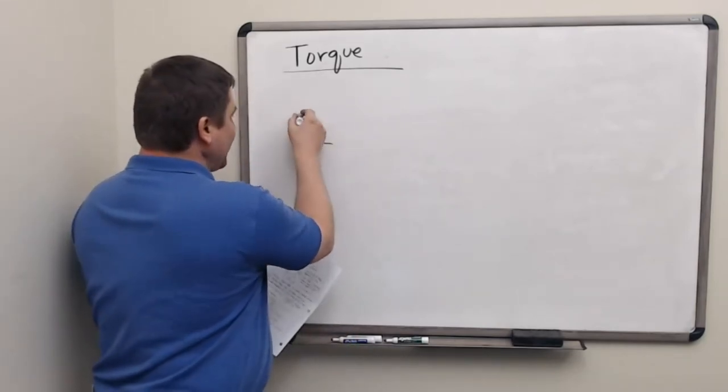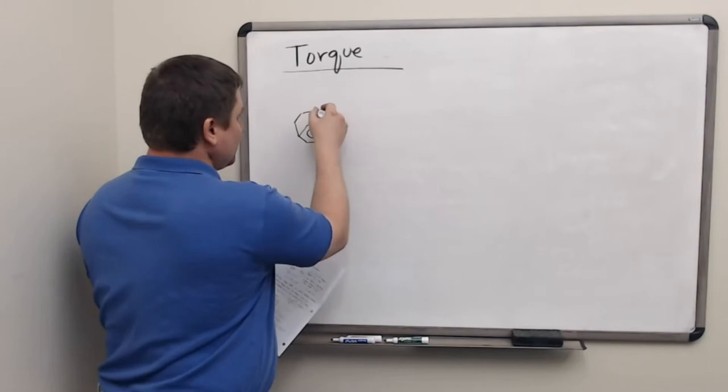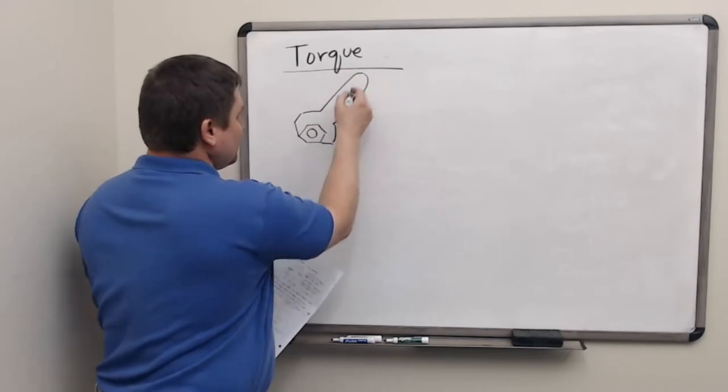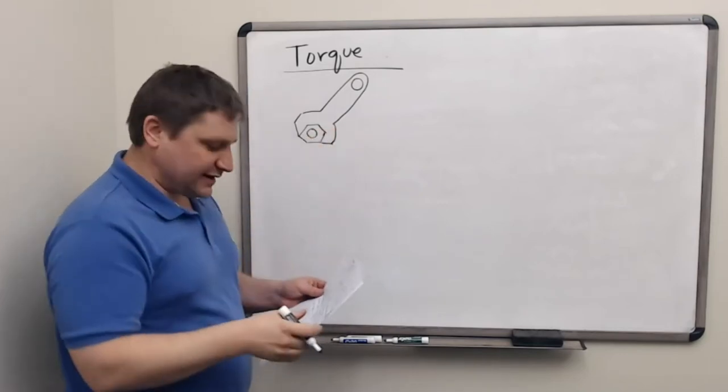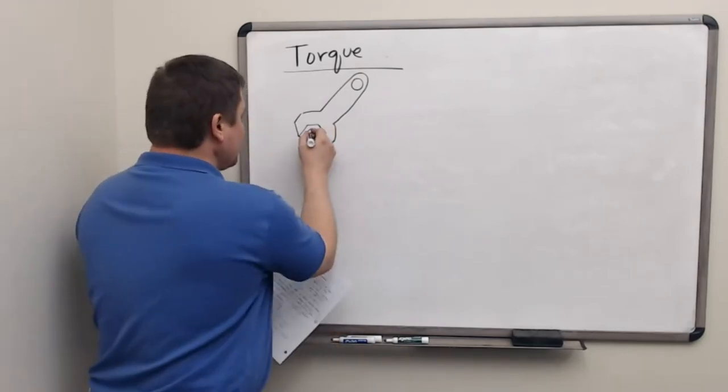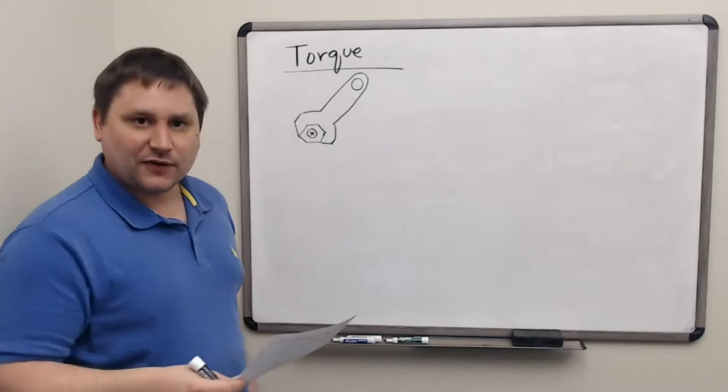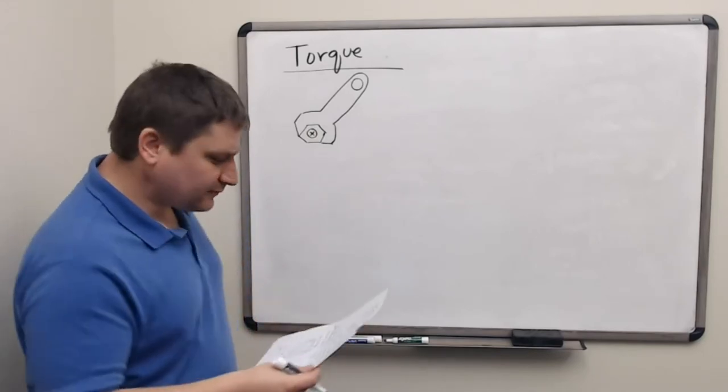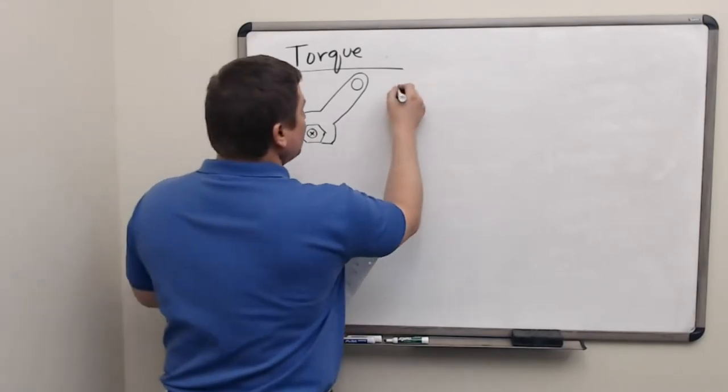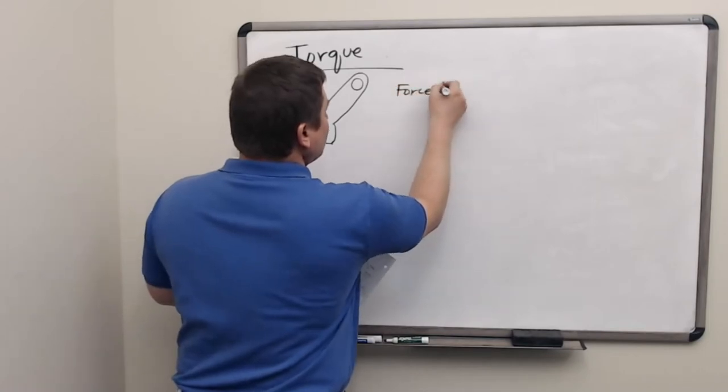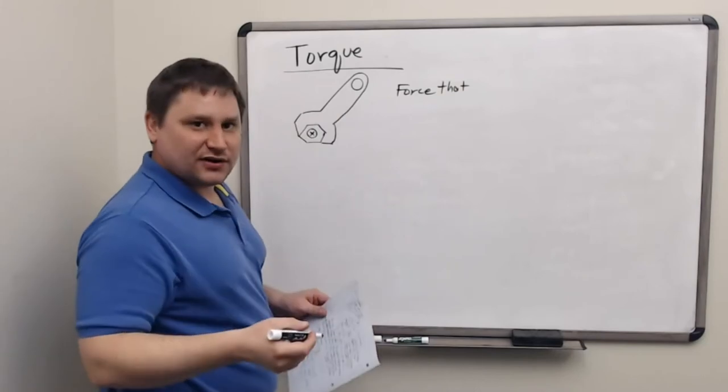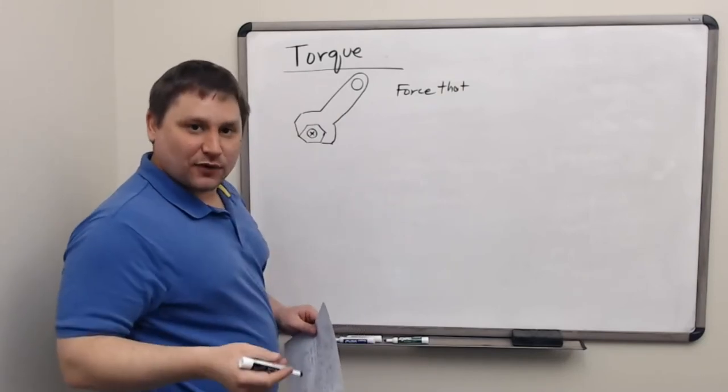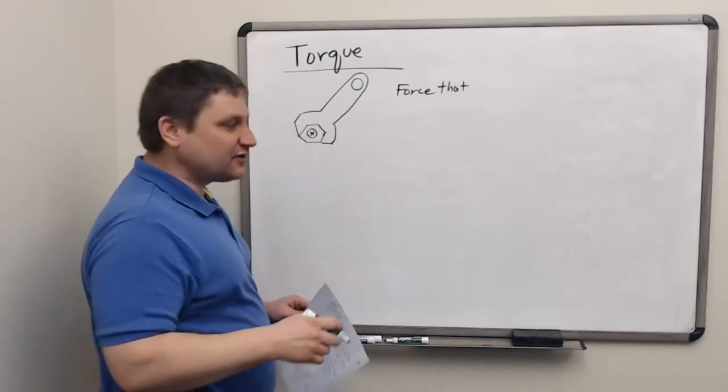So let's start off with a wrench, pulling on a bolt, trying to rotate it. As our model, we're thinking about how we'll quantify a torque.